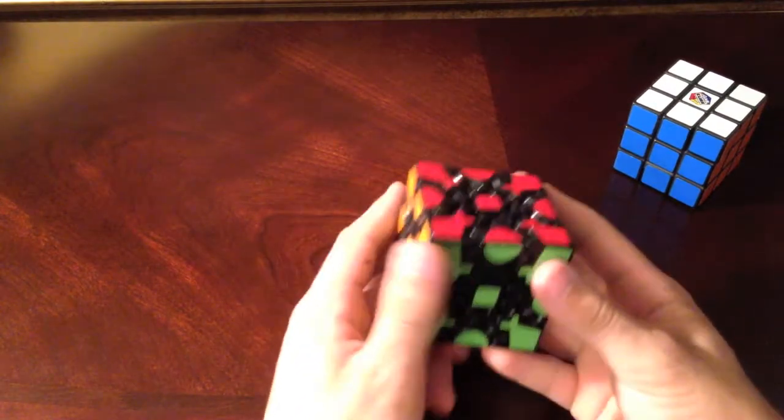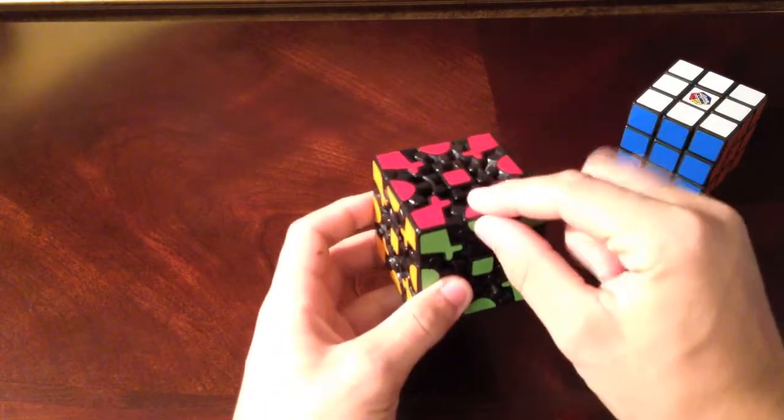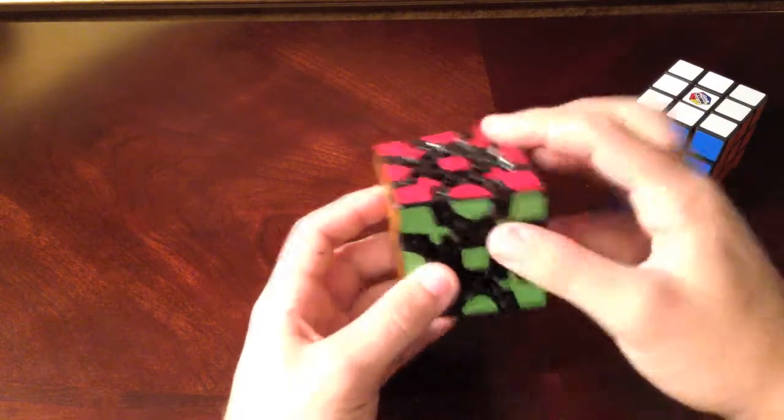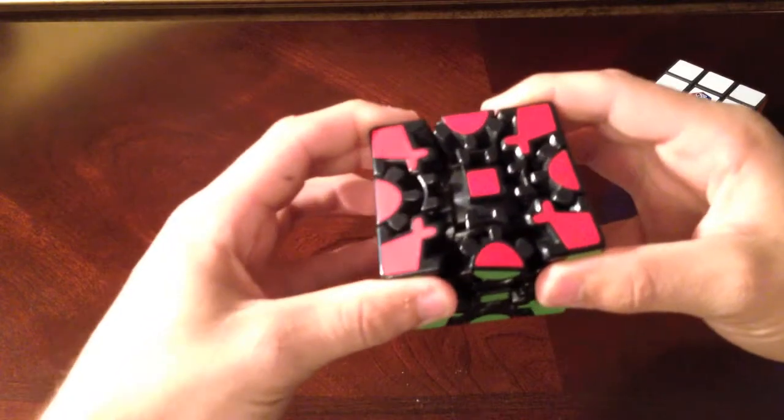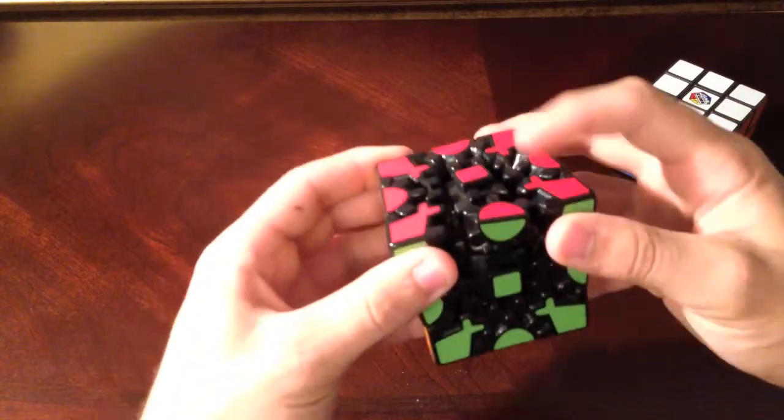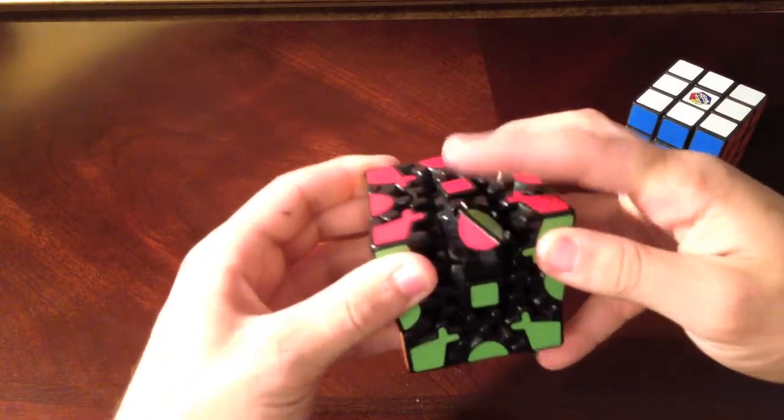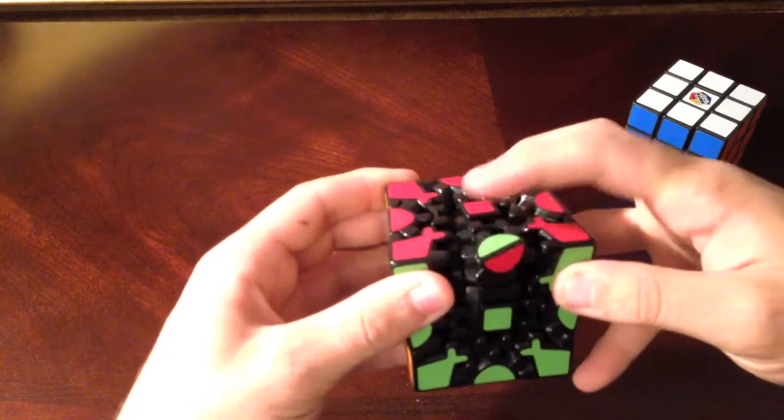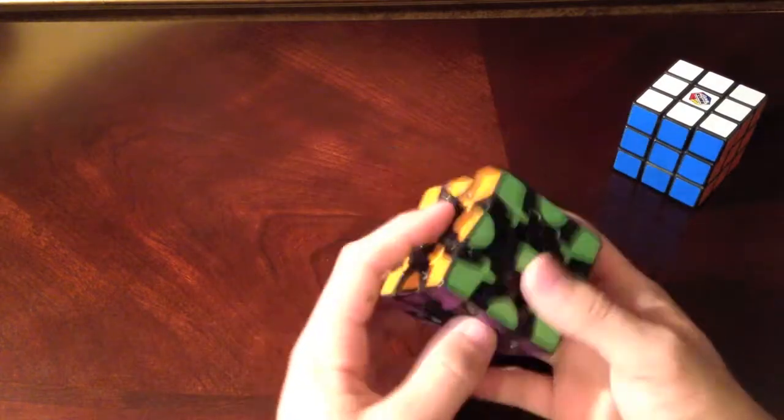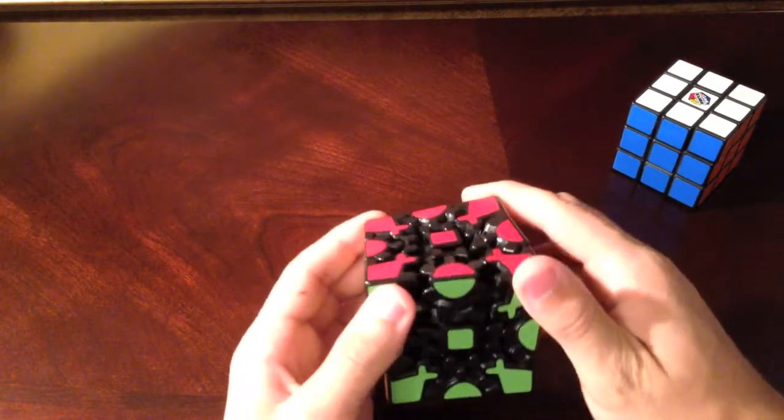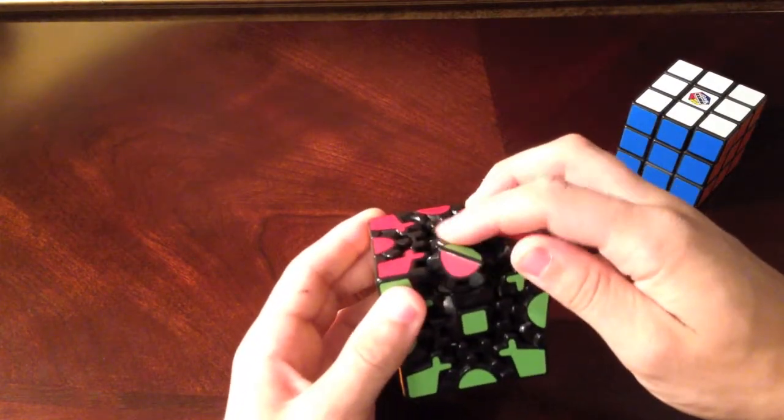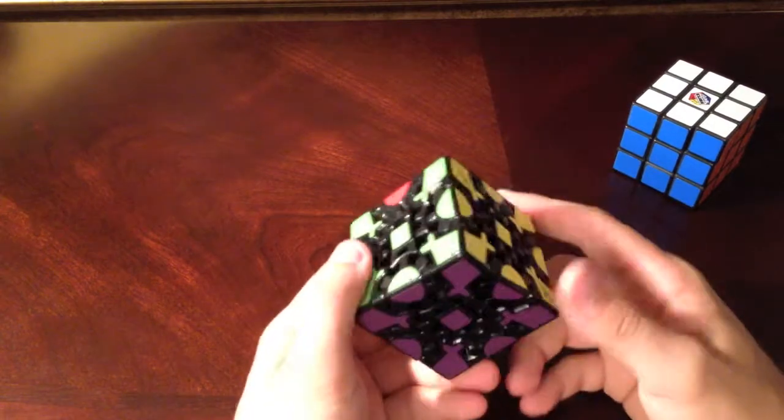Actually I never had a piece pop out from this cube, but what I do have sometimes is these edge pieces. They like to turn. As you can see it's a little bit loose. If I open it like this I can turn this side here as I want, which is not a good thing. It's still a good puzzle, but sometimes you will do some moves and then you'll have a piece turning.